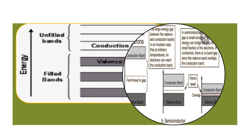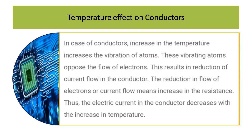In case of semiconductors, the gap is in between conductors and insulators. The lower band is called the valence band and the upper band is called the conduction band. The valence bands are filled bands and the upper bands are unfilled bands. Before going to semiconductors, let us study how temperature affects conductors.